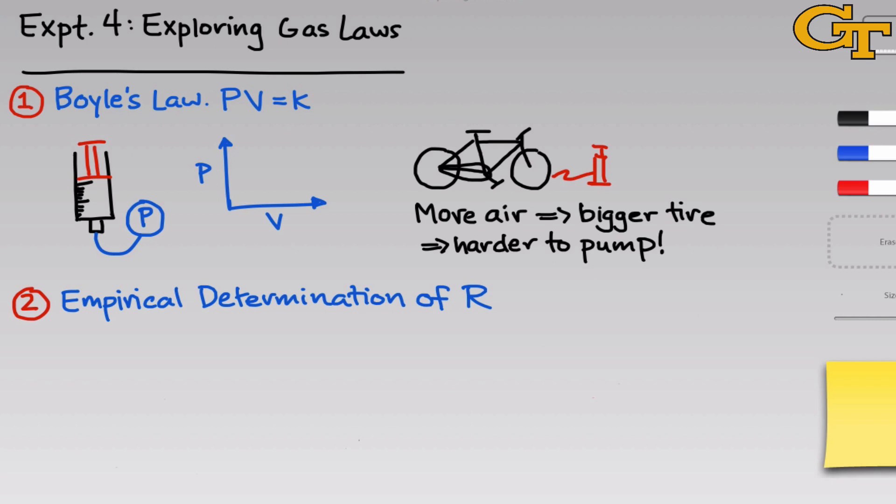In the second part of the experiment, we'll do an empirical determination of the ideal gas constant R. The ideal gas law says that pressure times volume is equal to number of moles times the ideal gas constant times the temperature, or the famous PV equals nRT.